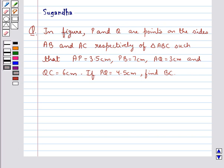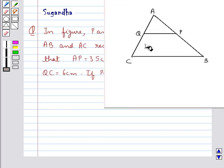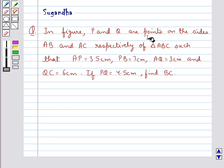Hello and welcome to the session. In this session we discuss the following question which says in this figure P and Q are points on the sides AB and AC respectively of triangle ABC.